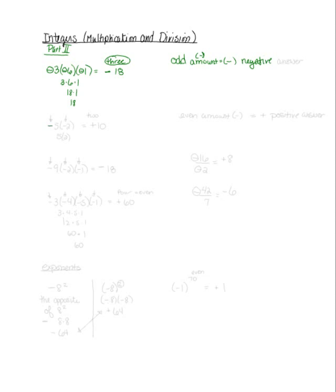Another example would be negative five times negative two. The five is directly in front of the parentheses, so it means multiplication — there is no operator separating the five from the parentheses. Using our rules, how many negative signs do you count? I count one, two — there are two negative signs. When you have an even amount of negative signs, you're going to get a positive answer. Two is even, so you get a positive answer. Five times two is ten.